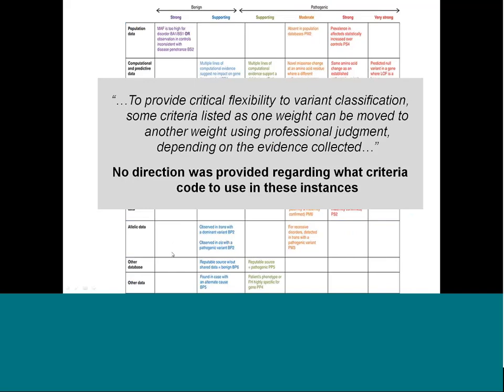One important clarification: even in the guidelines, each piece of evidence is given an assigned weight in the grid, but you can still change that weight using professional judgment. For example, you might be looking at a functional assay and not feel confident it's well-established, so you'd use it as moderate instead of strong. Or maybe you have lots of segregation data and want to move that up from supporting.